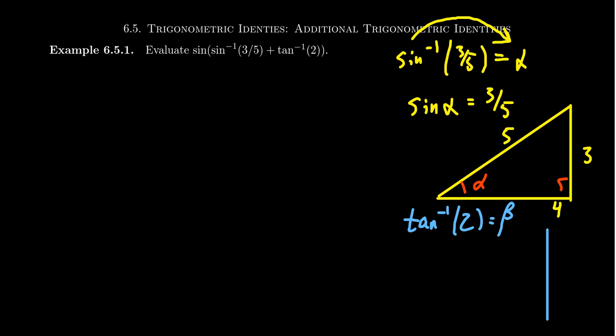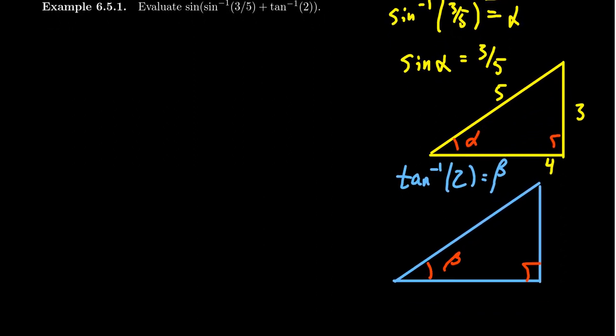We can do the same thing for beta. Let's draw a right triangle diagram for that situation as well. What we've learned about beta so far is that its tangent ratio, tangent of beta, is equal to two, or better yet, two over one. So opposite over adjacent is two and one. By the Pythagorean relationship, one squared is one, two squared is four, so the hypotenuse is the square root of five. With this right triangle diagram, we can compute any trig ratio with respect to beta.